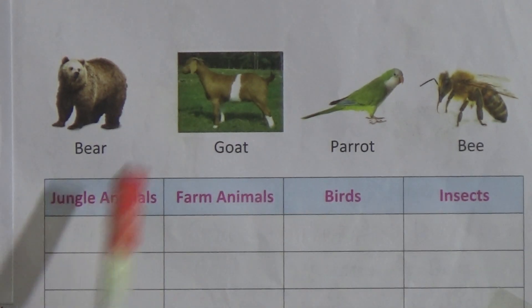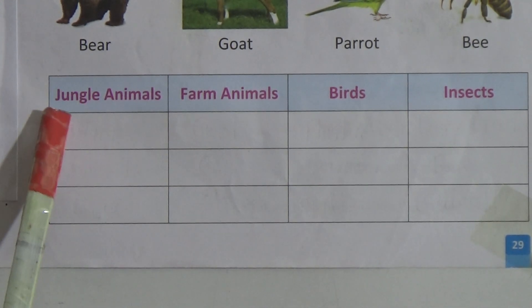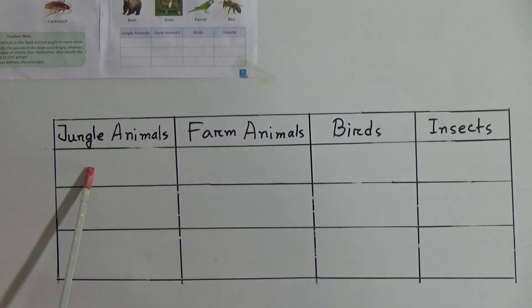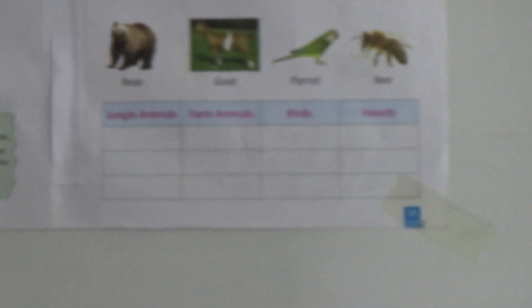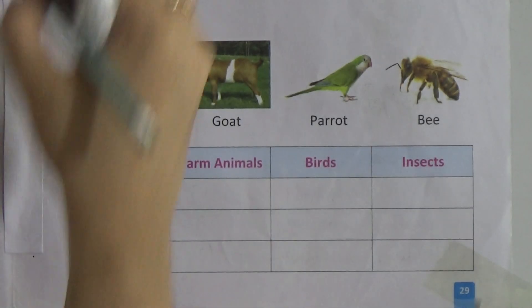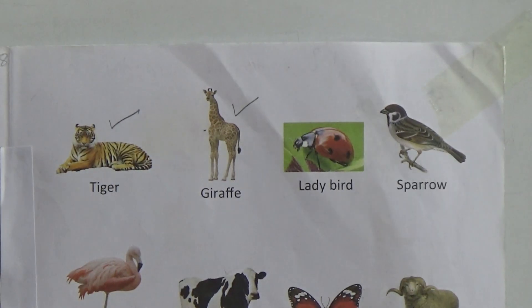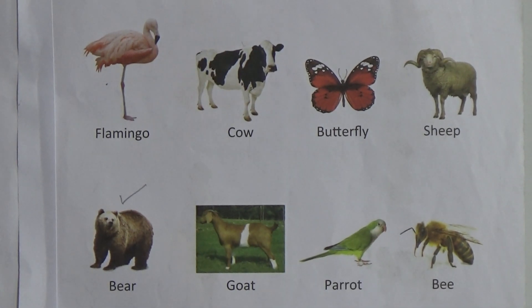Students, in our previous class we have learned jungle animal and farm animal. Now we will just separate their names from here. First point here is jungle animal — we will write here. I have made a table like in your book. From this picture, which one is jungle animal? Identify them. Yes, this one is jungle animal — tiger. It lives in the jungle. And next one is giraffe, this one is also jungle animal. And next animal name is bear — bear is a jungle animal.